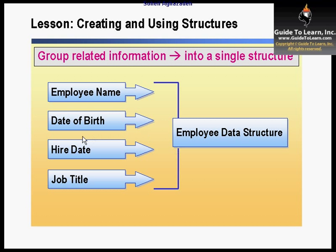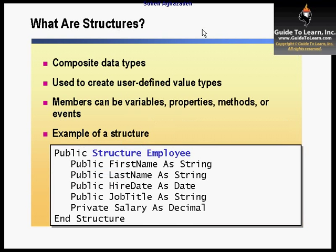For example, you might want to combine different information regarding a person — like employee name, date of birth, hire date, and job title — as one single structure. We know this as an employee data structure. In order to declare a structure, you use the following syntax. Structures are composite data types used to create user-defined value types. The members can be variables, properties, methods, or even events. It's very similar to modules or a class, and you could use them as a data type.